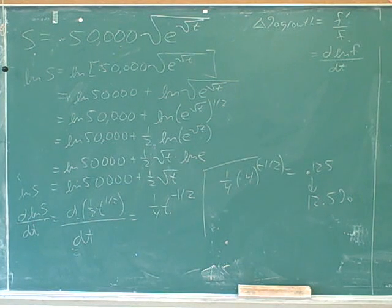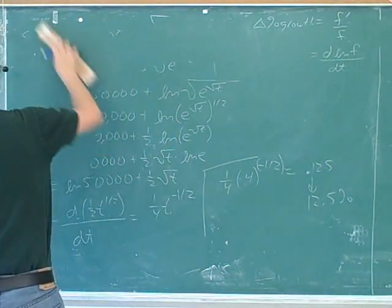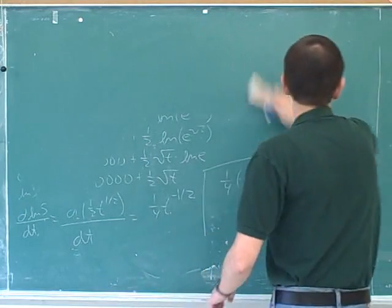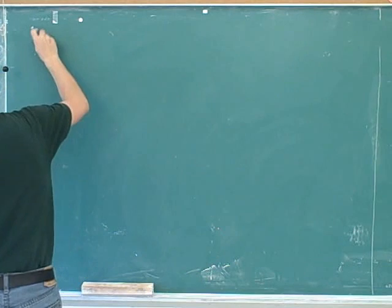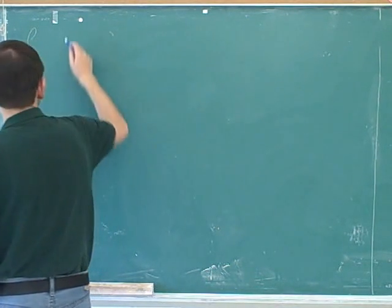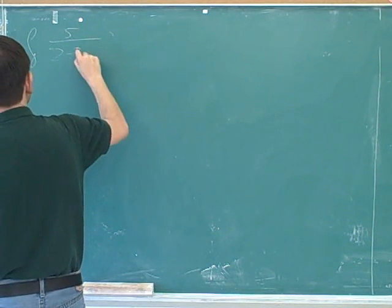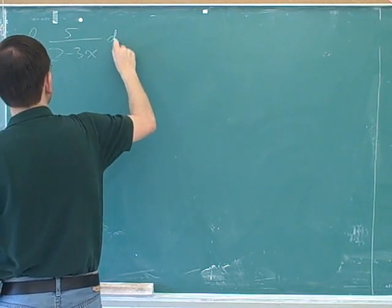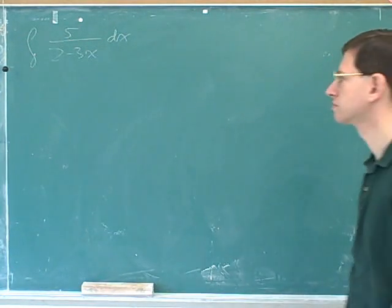Can we do the anti-differentiation of 5 over 2 minus 3x? Sounds like fun. Tell me the function again, please. The integral of 5 over 2 minus 3x. Like this? Yeah.